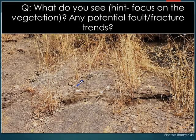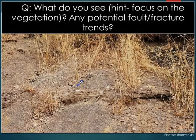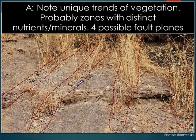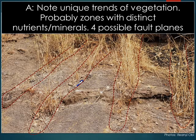This is another example. I'd like you to focus on the vegetation — if you see anything, if you can make out any potential faults or fracture trends, that would be great. So in the interpretation, you notice the unique trend of vegetation, and those are probably zones with very enriched nutrients or distinct minerals. So here we have potentially four faults playing out, looking at it from this map view.